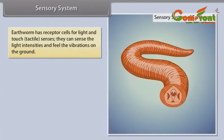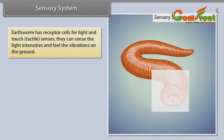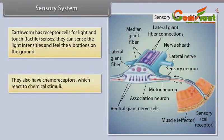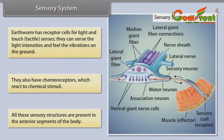Sensory System: Earthworm has receptor cells for light and touch (tactile senses). They can sense light intensities and feel vibrations on the ground. They also have chemoreceptors which react to chemical stimuli. All these sensory structures are present in the anterior segments of the body.